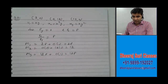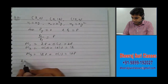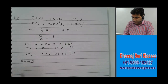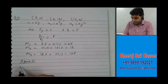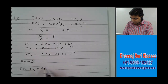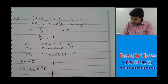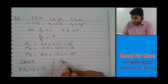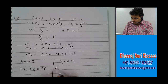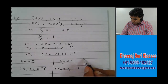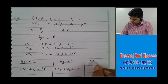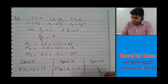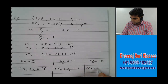Now what are the budget lines? For agent 1 the budget line would be Px·x1 plus y1 is equal to income 2P. For agent 2, Px·x2 plus y2, and his income is 12. And for agent 3, Px·x3 plus y3, and his income is 12P.